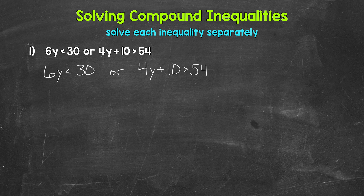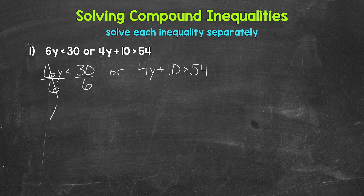Let's start with 6y is less than 30. We need to isolate the variable y. y is being multiplied by 6, so we need the inverse operation of multiplication — that's division. So let's divide the left side by 6, and whatever we do to one side of an inequality, we must do to the other. We divide the right side by 6 as well. The 6s on the left cancel each other out, so y is now isolated. y is less than 30 divided by 6, which gives us 5. So we have y is less than 5.